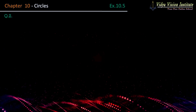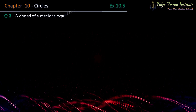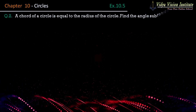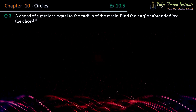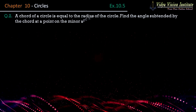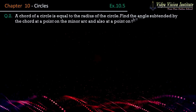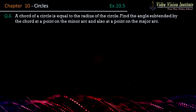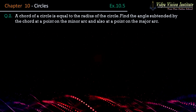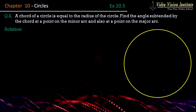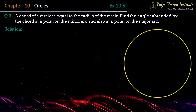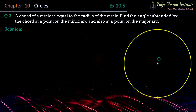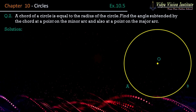Question number 2 bhi solve kar lete hain. Question number 2 hai: A chord of a circle is equal to the radius of the circle. Find the angle subtended by the chord at a point on the minor arc, and also at a point on the major arc. Iska bhi figure draw kar lete hain. Jaisa ki yeh ek circle hai, iska center hai O.